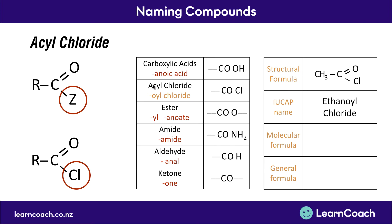Some of you may have come across the name acyl halide, which includes any of the halide atoms — most commonly bromine — but for your Level 3 exams, acyl chlorides are the only ones that will come up. For the molecular formula, we've got our CH₃ group and our COCl group on the end. The general formula just replaces that extra chain of carbons with an R, but we keep the ending COCl so we can identify it as an acyl chloride.